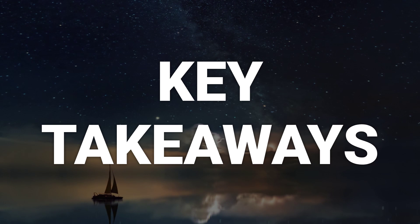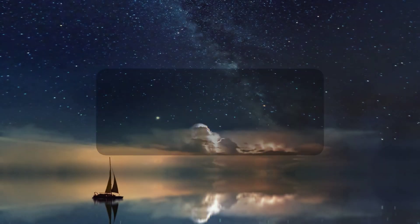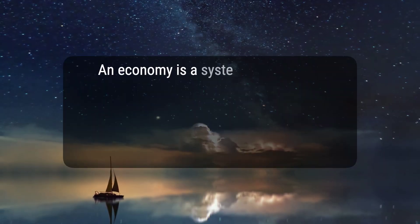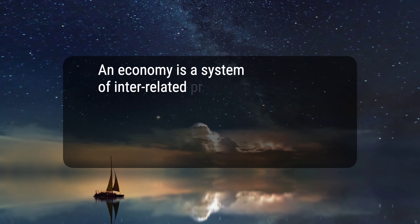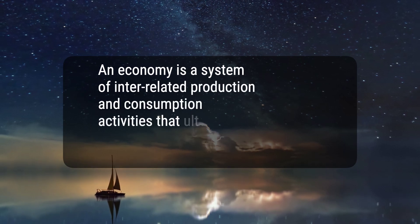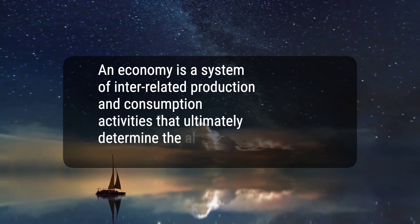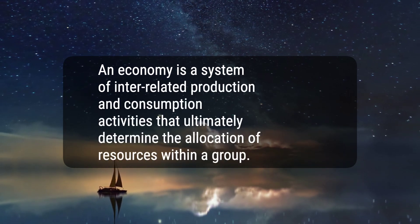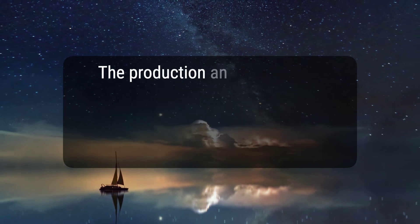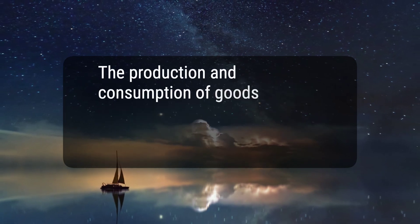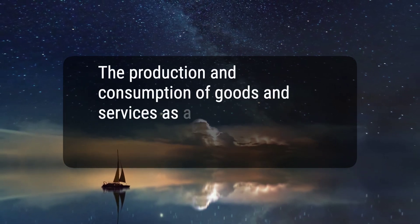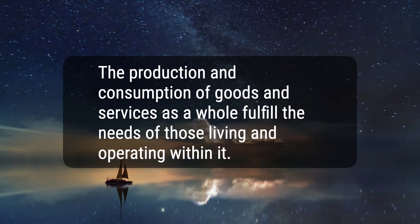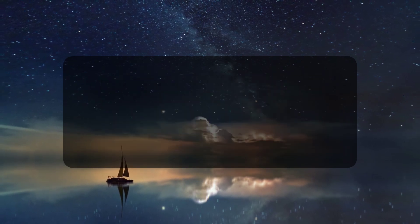Here are five key takeaways. One: an economy is a system of interrelated production and consumption activities that ultimately determine the allocation of resources within a group. Two: the production and consumption of goods and services as a whole fulfill the needs of those living and operating within it.